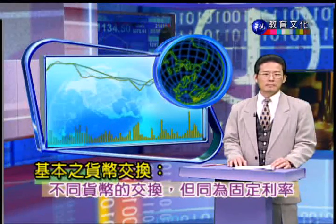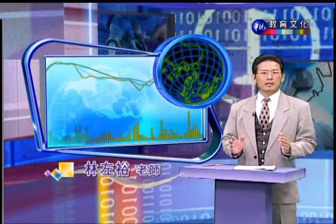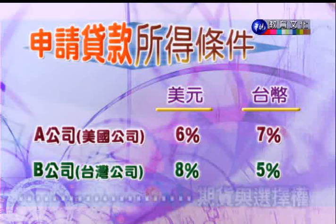我们简单介绍基本的货币交换——用不同货币交换但同样是固定利率计息。假设A公司是美国公司、B公司是台湾公司，在美国A公司享有比较高的债信，相对上在台湾B公司会有比较高的债信。AB公司分别向各自金融市场申请贷款的条件如下：对A公司（美国公司）来讲，借美元比较便宜6%，借台币是7%；对B公司（台湾公司）来讲，借美元比较贵8%，借台币5%比较便宜。